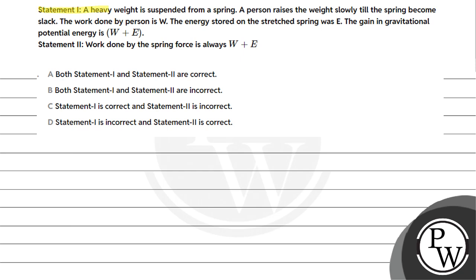Let's read the question. Statement 1: A heavy weight is suspended from a spring. A person raises the weight slowly till the spring becomes slack. The work done by person is W, the energy stored on the stretched spring was E. The gain in gravitational potential energy is W plus E. Statement 2: Work done by the spring force is always W plus E.